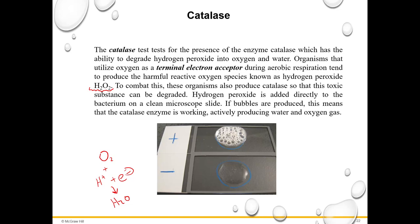For the catalase test procedure, you take some bacteria off of a plate and smear it directly on the surface of a microscope slide, then add hydrogen peroxide directly to the surface. If you see bubbles, that means catalase is breaking down the hydrogen peroxide into oxygen and water — that's a positive result. If there are no bubbles, that's a negative result.